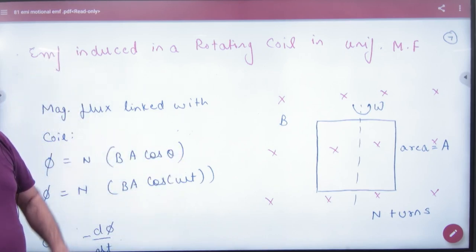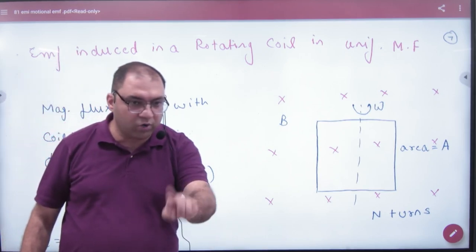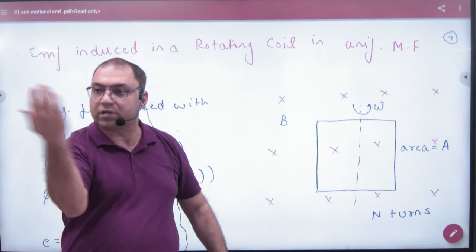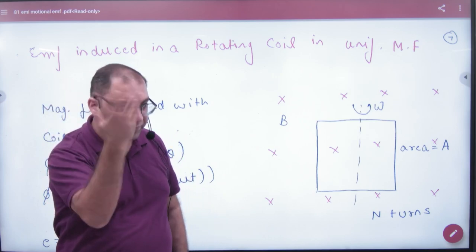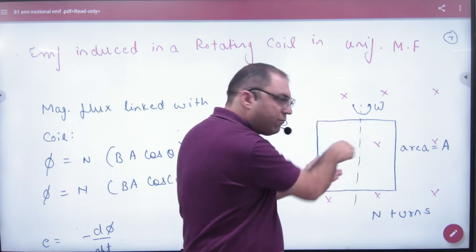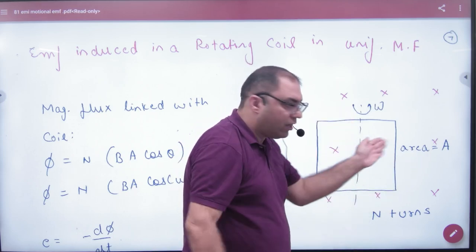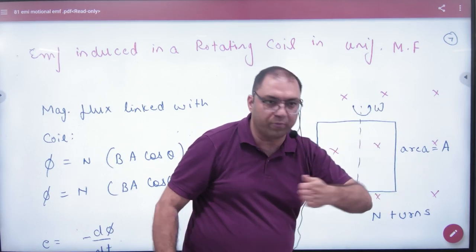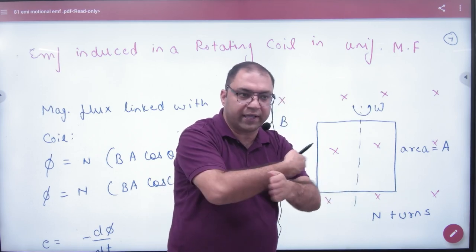So how will EMF generate? Because it will cut lines. Imagine that B board is in the area vector, it goes into the board. When it goes into the loop, then the area vector will go out like this. So the area vector B with the angle is theta.